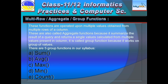In multi-row functions, the functions operate upon multiple values obtained from multiple rows of a particular column. All values of a particular column are passed to the function. That column should generally be numeric. These functions work on numeric columns except COUNT. COUNT works on all types of columns. MIN and MAX also work on various data types, but SUM and AVG work only on numeric columns. These are also called aggregate functions because they summarize the result of a query and return a single value calculated from multiple values present in a column.